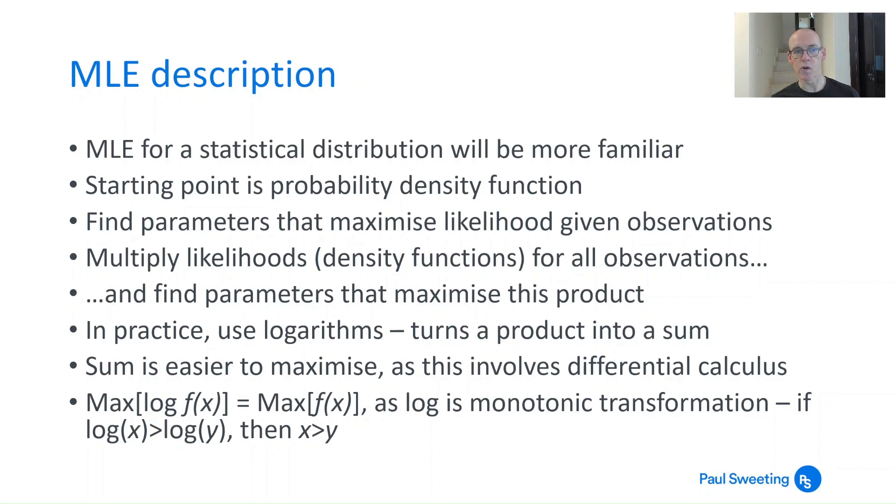In practice you also use logarithms, so when you're multiplying everything together you get something which is a really big product which can be complicated to maximize. If you take the logarithm, it turns this product into a long sum, and that means doing the differential calculus is much easier. Because the likelihood is always positive, you can always apply log, and because log is a monotonic transformation, if you find the maximum for the log function, you've also found the maximum for the function itself.